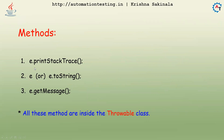The first one is e.printStackTrace(), where e is the exception object in the catch block. The second is e or e.toString(), and the third is e.getMessage(). All three of these methods are inside the Throwable class because it is the parent class. If it is having these three methods, all child classes will also access them. So whatever exception you use, on that exception object you can call these methods.